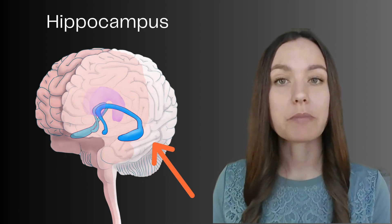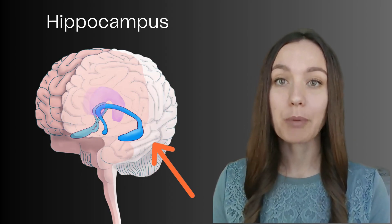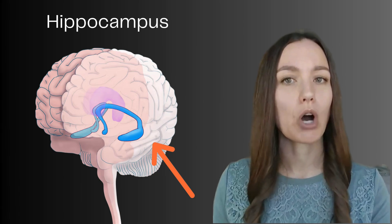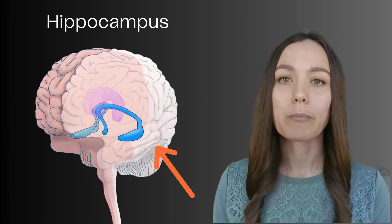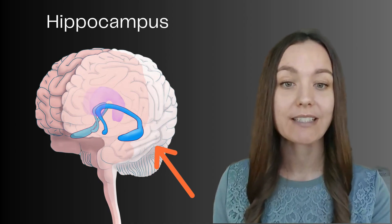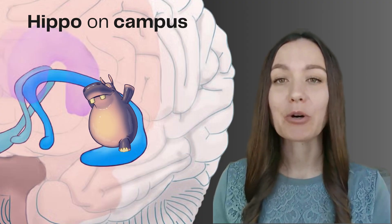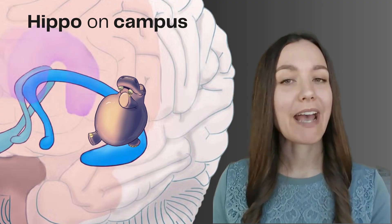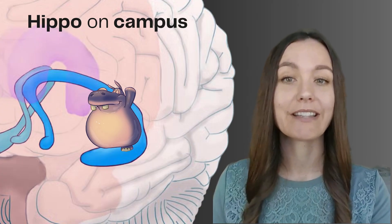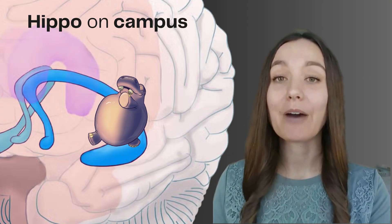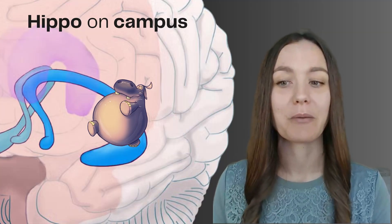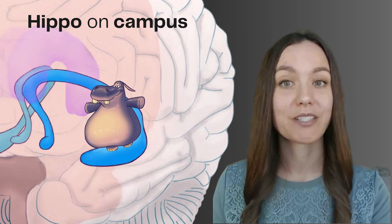Getting back into the limbic system, our next part is the hippocampus. The hippocampus looks like two arms wrapping around the thalamus, and it plays a key role in forming new long-term memories and helping you remember facts and experiences. A simple trick to help you remember the role of the hippocampus in housing our long-term memories is in the word itself: you will never forget the day you see a hippo on campus. That would be a pretty unforgettable memory — one that would be housed in your hippocampus.